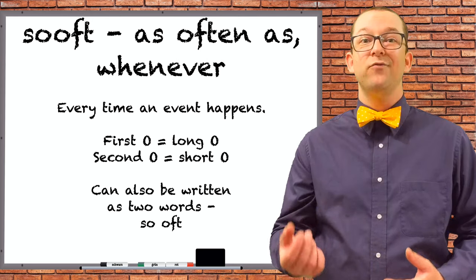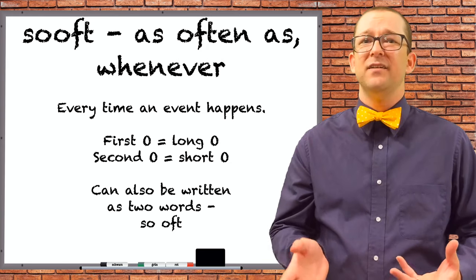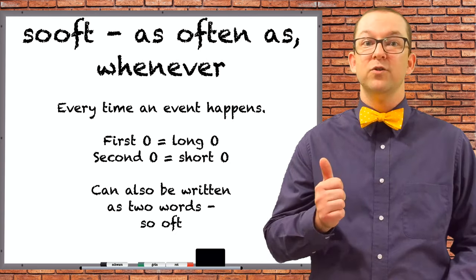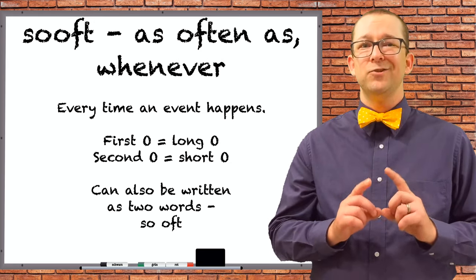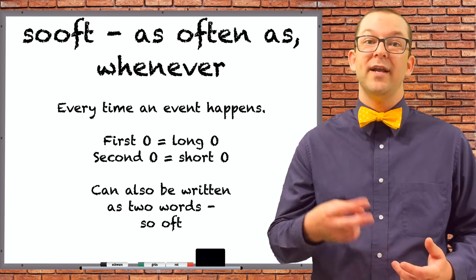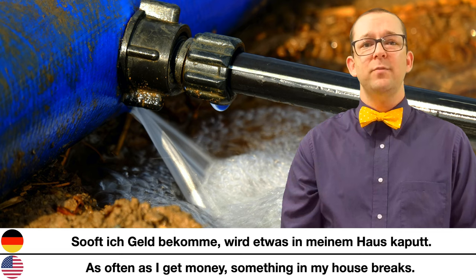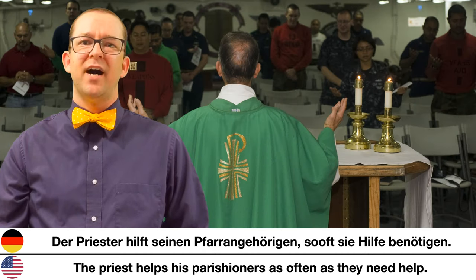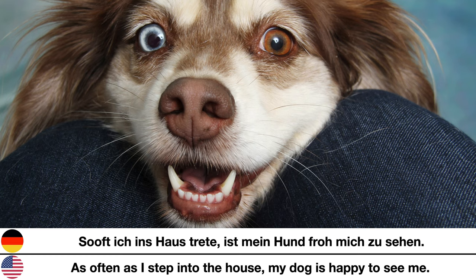You can use sooft to mean 'as often as' or 'whenever.' Note the correct pronunciation has two completely separate O sounds: a long O in 'so' and a short O in 'oft.' Duden officially lists this as one word, but it can also be written as two words. Examples: 'Sooft ich Geld bekomme, wird etwas in meinem Haus kaputt.' — As often as I get money, something in my house breaks. 'Der Priester hilft seinen Pfarrangehörigen, sooft sie Hilfe benötigen.' — The priest helps his parishioners as often as they need help. 'Sooft ich ins Haus trete, ist mein Hund froh, mich zu sehen.' — As often as I step into the house, my dog is happy to see me.